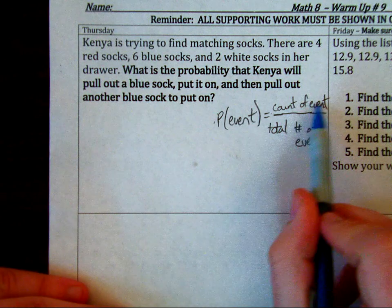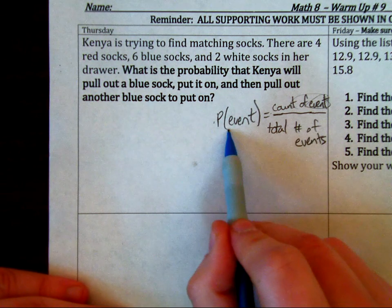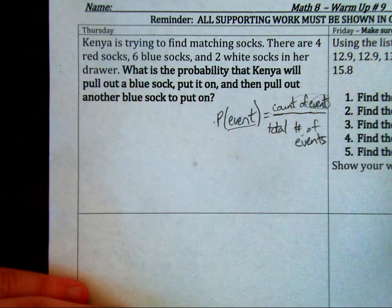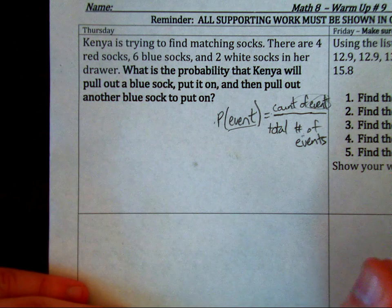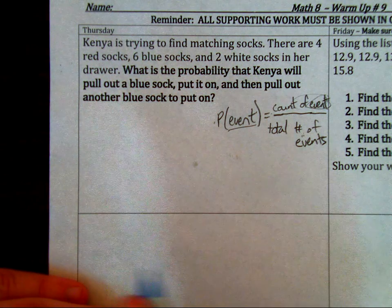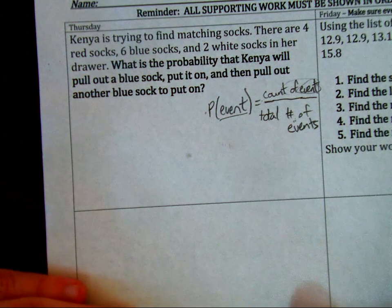So we're trying to say, okay, in the numerator, whatever event it is, that's what we're looking for. In the denominator, the total. Super simple. If you can count and you can multiply, you can do probability.